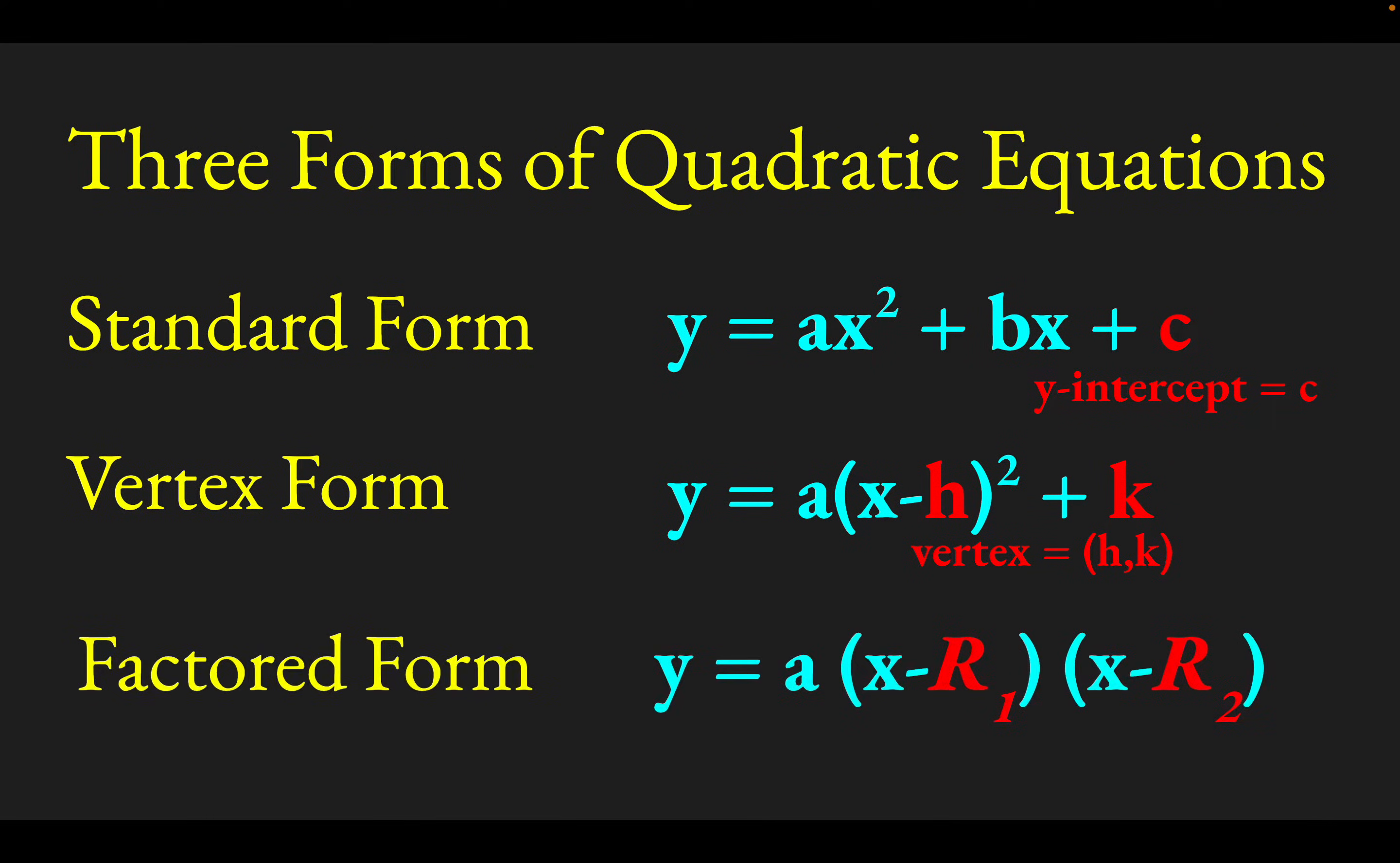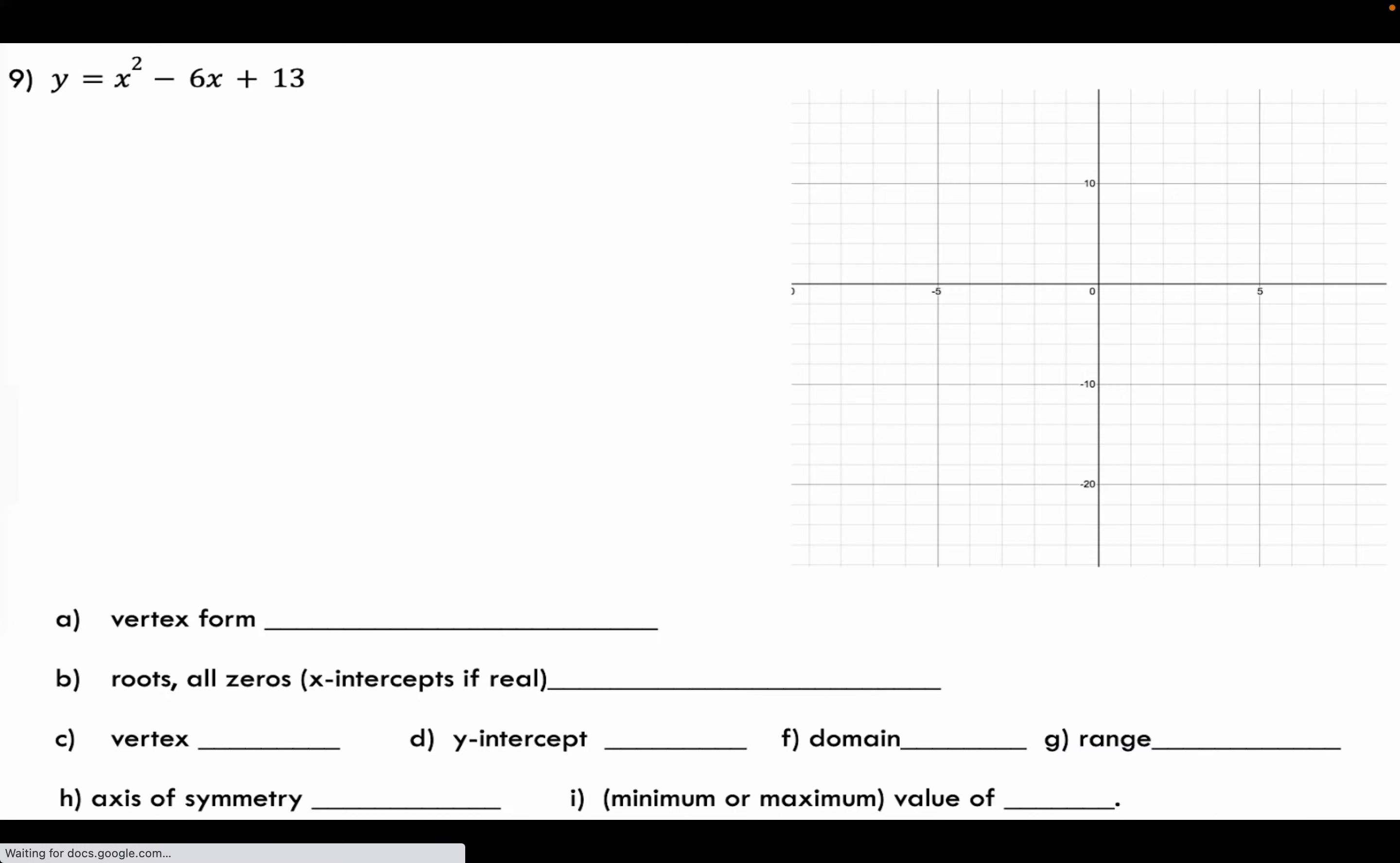And finally, we have the factored form. These values r1 and r2 are the roots of the equation. It would show where, for instance, the graph crossed the x-axis if it were to have x-intercepts. So the roots are r1 and r2. Let's do a quick example of this.